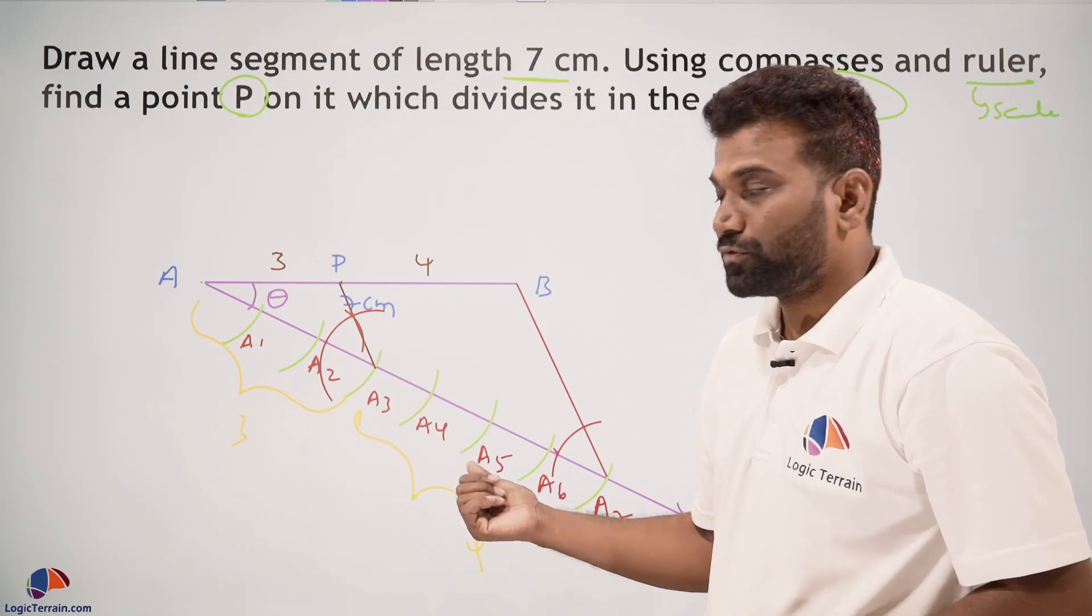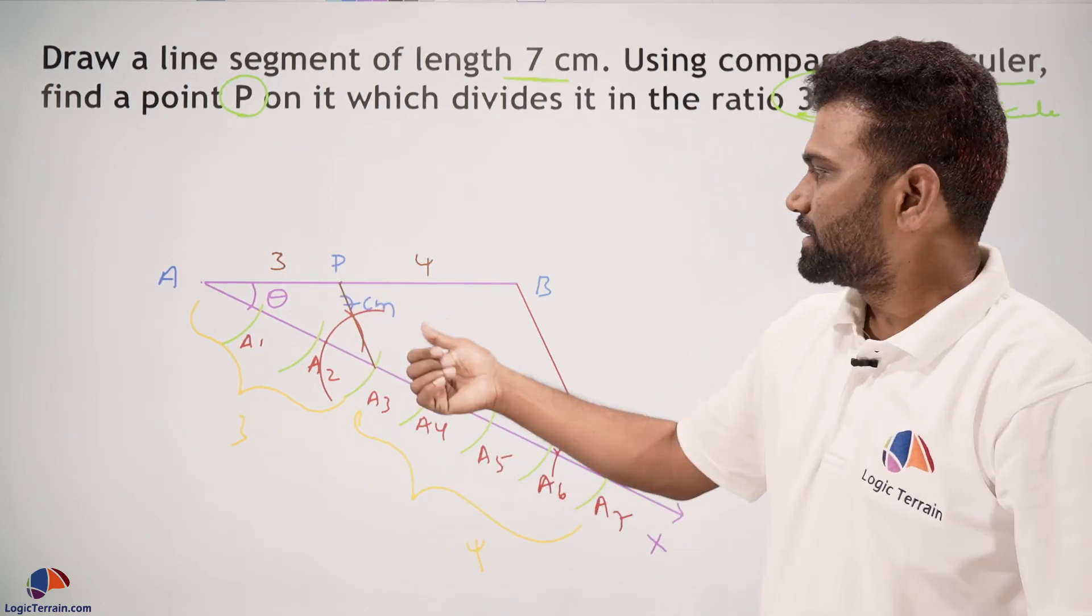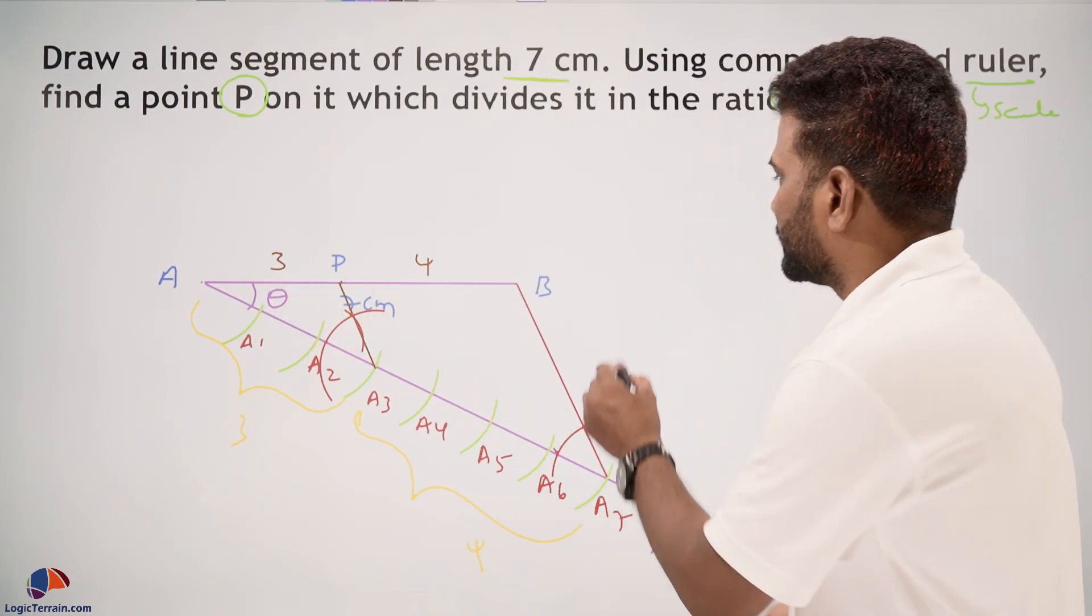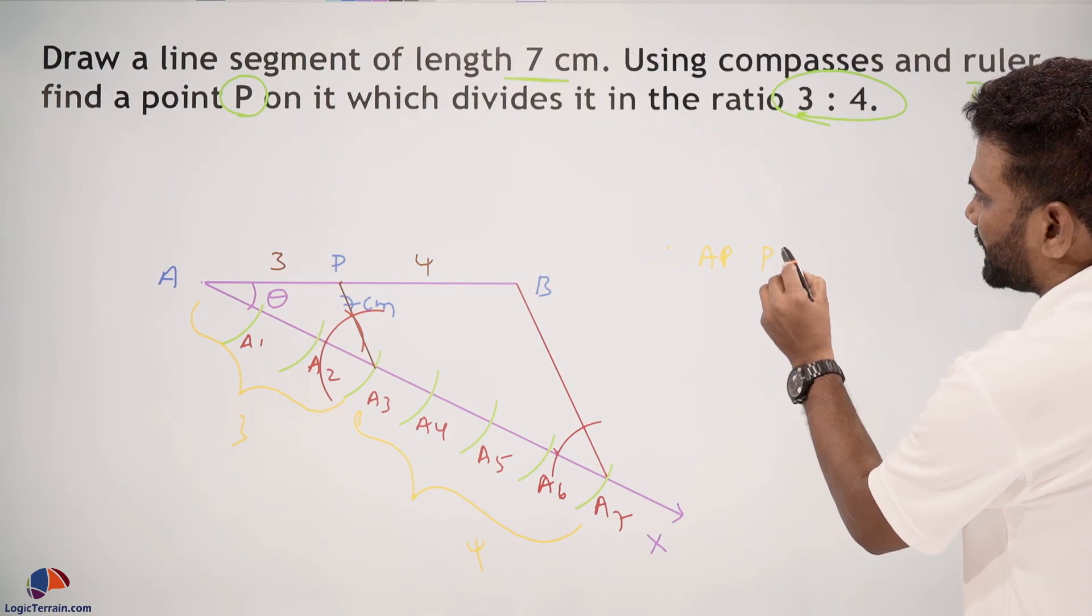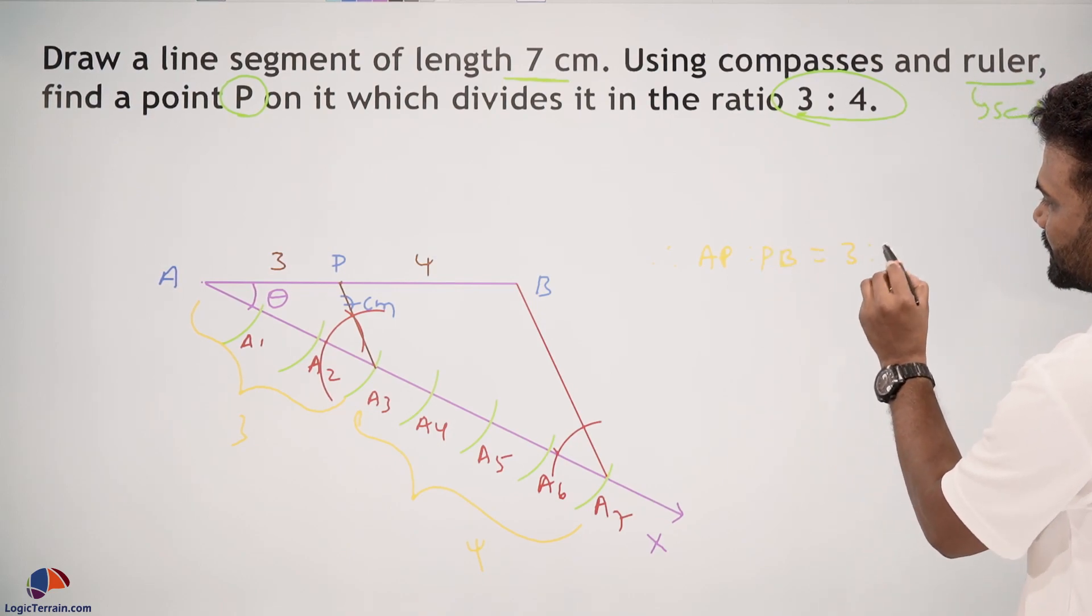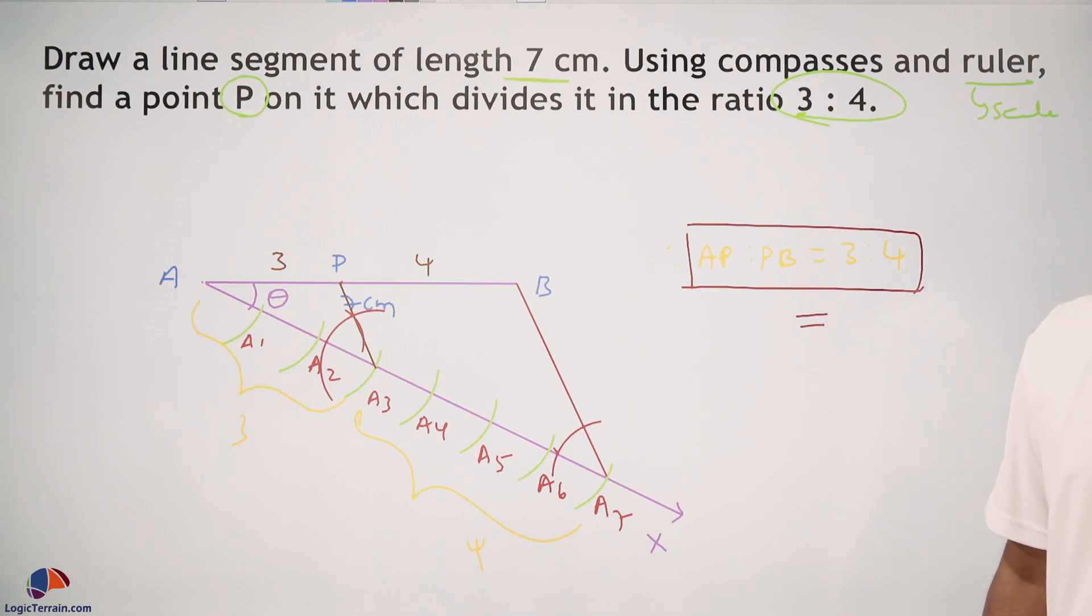Therefore, AP:PB equals 3:4. This is our required ratio.